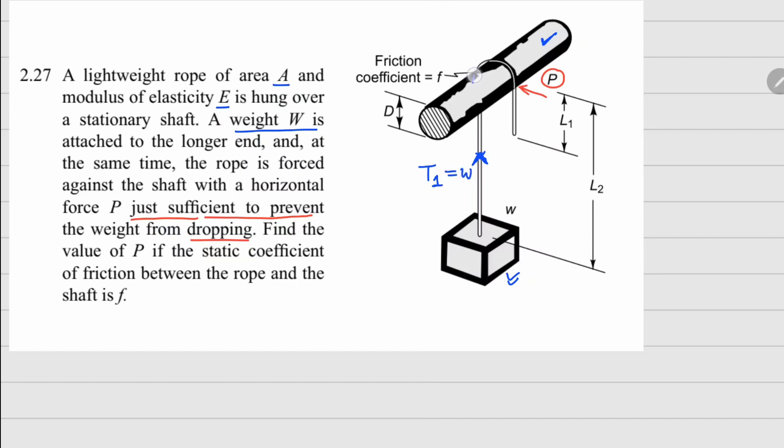Now this whole string is going over this shaft. If I take out this string and draw it separately, on this side we have T₁ acting, which equals W. The tendency of motion was going downwards, so this friction force is going to oppose the motion. On this string you have this friction force Fr sitting there.